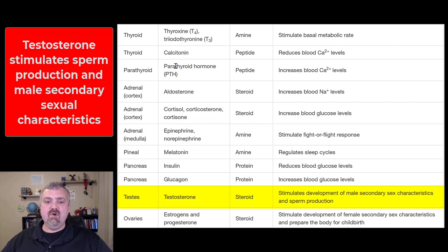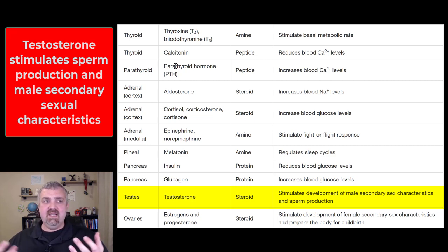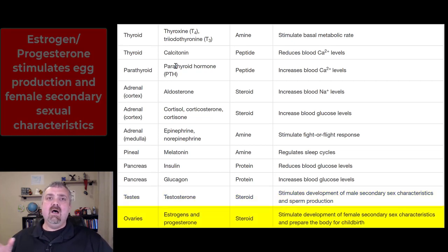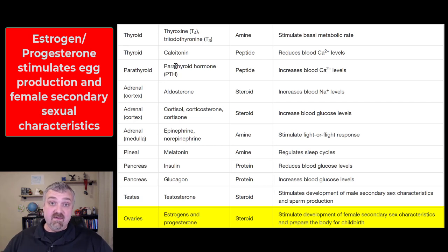Then we have the gonads — testes in males and ovaries in females. The testes produce testosterone and its derivatives, which are needed for male secondary sexual characteristics like fat distribution, body hair, and voice changes. The ovaries produce estrogen and progesterone, needed for the development of eggs, reproduction, and female secondary sexual characteristics.